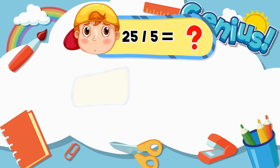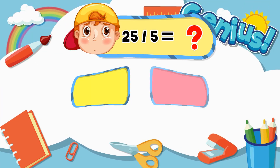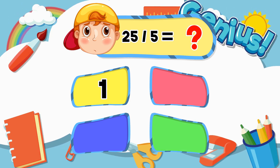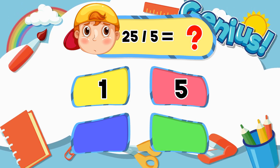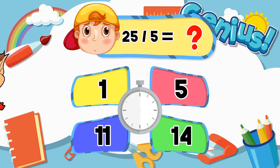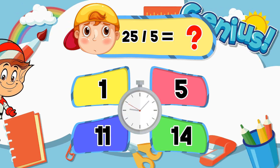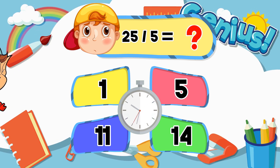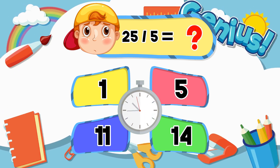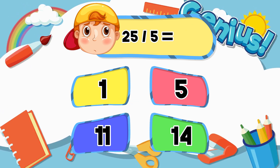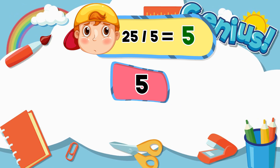What is 25 divided by 5? Options: 1, 5, 11, 14. Answer: 5.